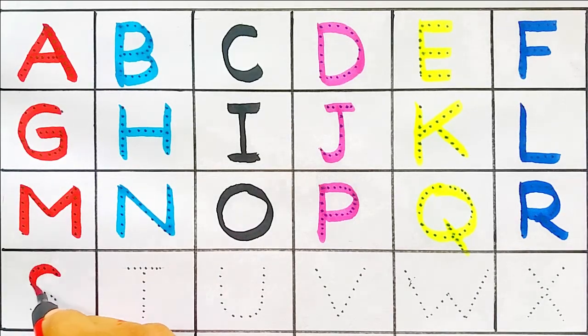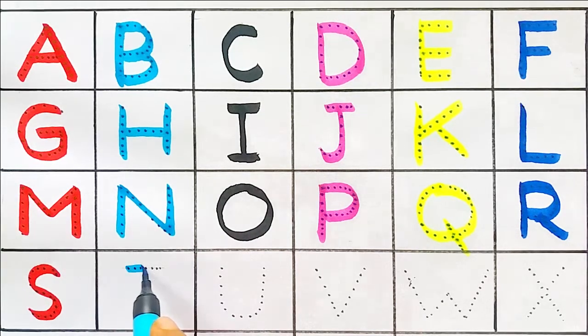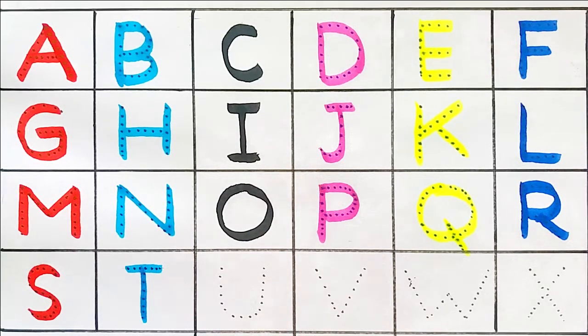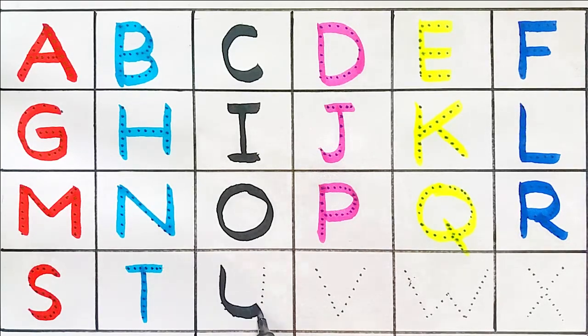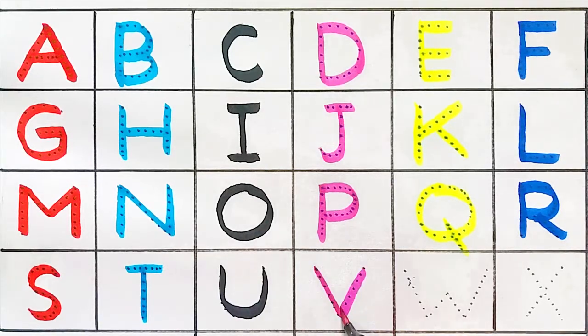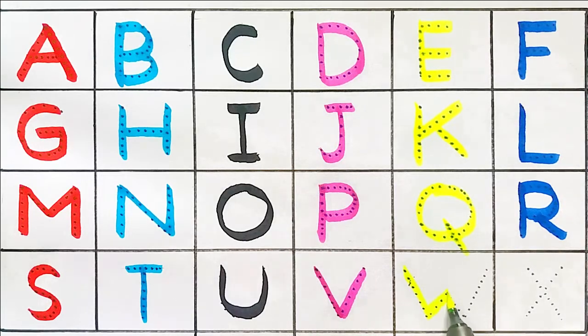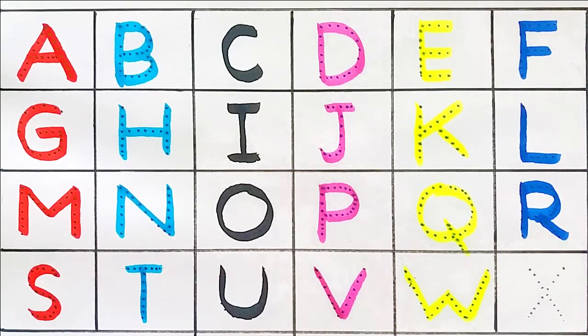S. S for Spider. T. T for Turtle. U. U for Jukwa. B. B for Village. W. W for Window.